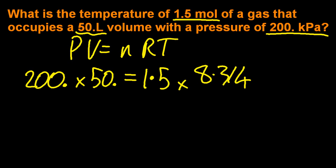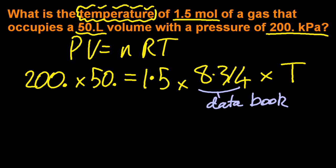The gas constant, well, that's in the data booklet. And that just leaves me with T for temperature. Now when I solve that, it's going to give me temperature in Kelvin, don't forget.